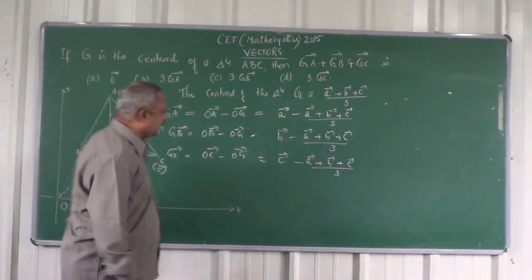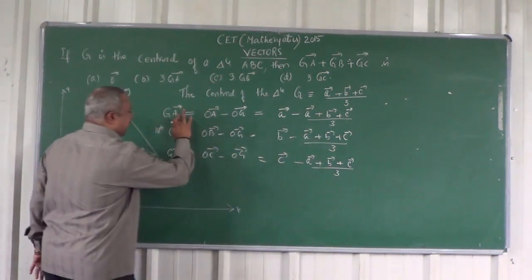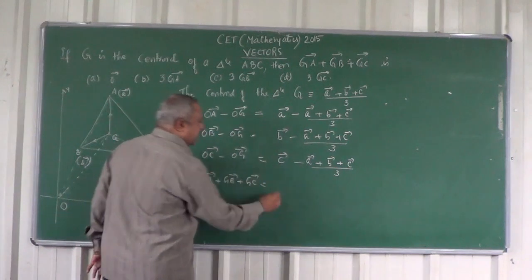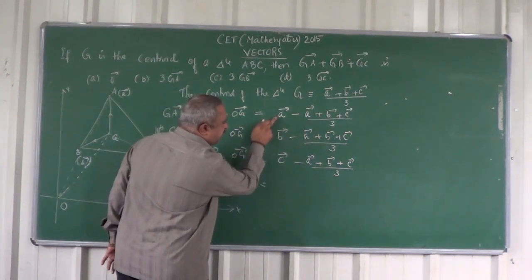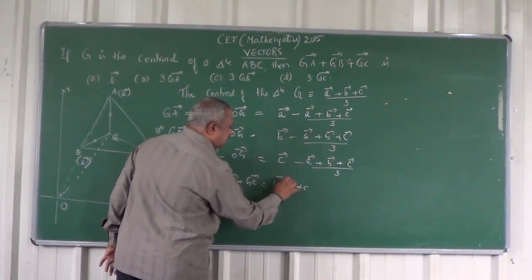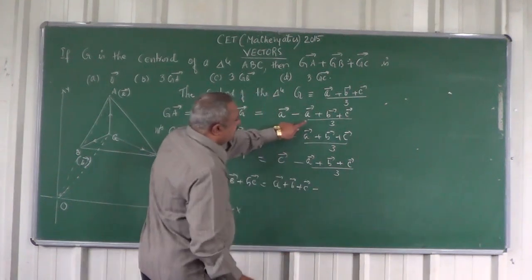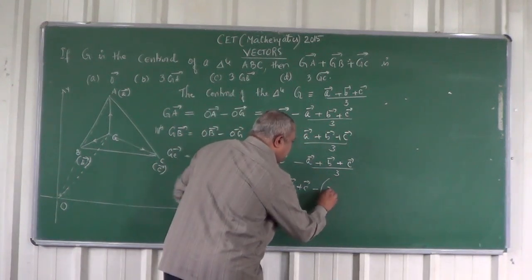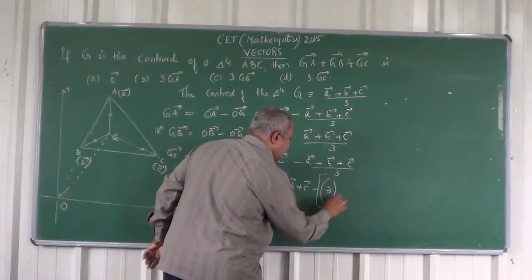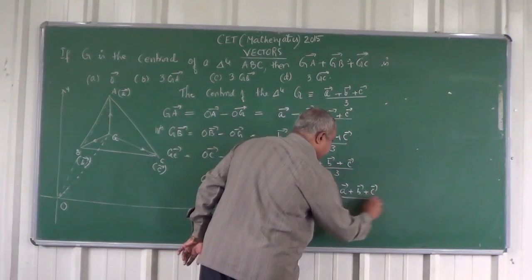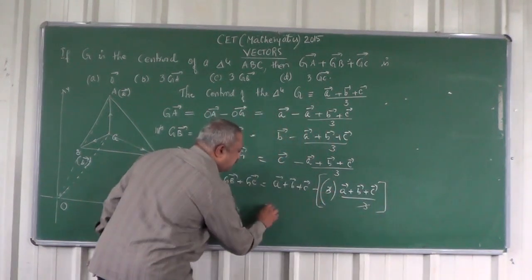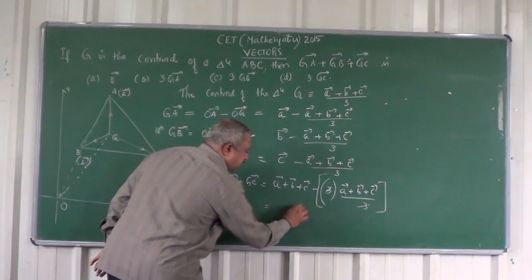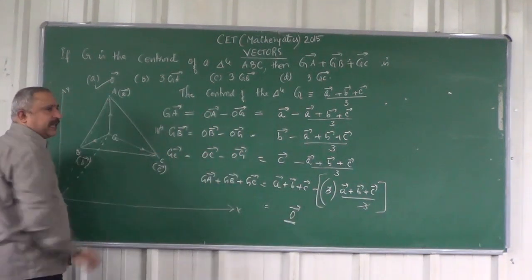Now you add up all these vectors. Therefore, vector GA plus vector GB plus vector GC equals (vector A plus vector B plus vector C) minus three times of (vector A plus vector B plus vector C) divided by 3. This 3 and this 3 cancel. Vector A minus vector A, plus vector B minus vector B, plus vector C minus vector C gives the zero vector. So the answer is A.